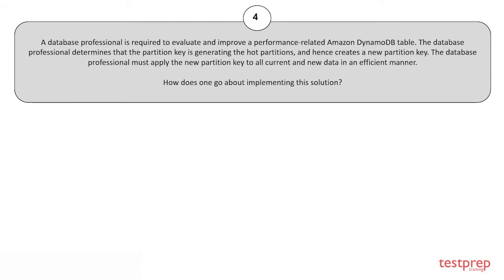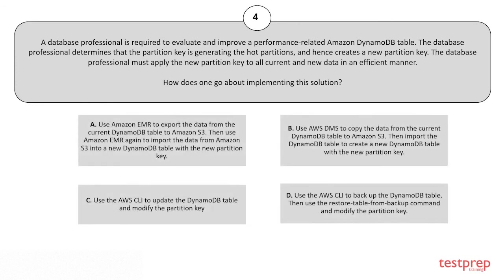Question 4: A database professional is required to evaluate and improve a performance-related Amazon DynamoDB table. The database professional determines that the partition key is generating hot partitions and hence creates a new partition key. The database professional must apply the new partition key to all current and new data efficiently. Options: A) Use Amazon EMR to export data from the current DynamoDB table to Amazon S3, then use Amazon EMR again to import the data into a new DynamoDB table with a new partition key. B) Use AWS DMS to copy data from the current DynamoDB table to Amazon S3, then import the DynamoDB table to create a new table with a new partition key. C) Use the AWS CLI to update the DynamoDB table and modify the partition key. D) Use the AWS CLI to backup the DynamoDB table, then use the restore-table-from-backup command and modify the partition key. The correct answer is option D.